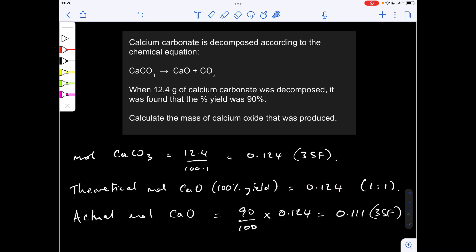So all we do is 90 over 100, or 0.9, times 0.124. So we're actually going to get that many moles to three significant figures of the calcium oxide. So the actual mass of calcium oxide is just the moles times the MR, 6.25 grams to three significant figures.